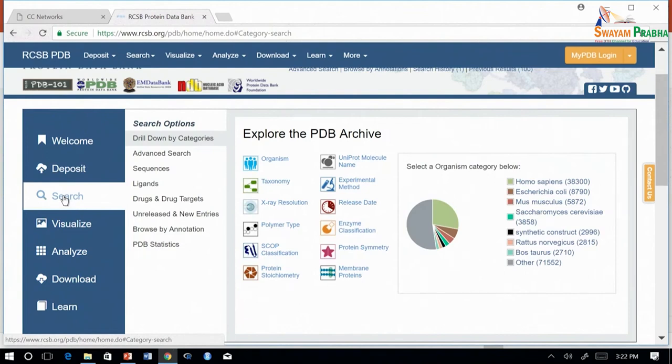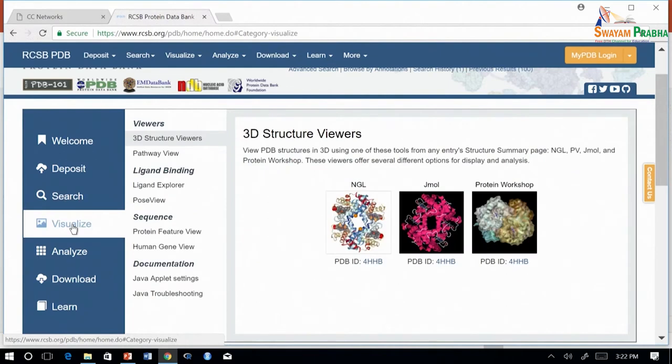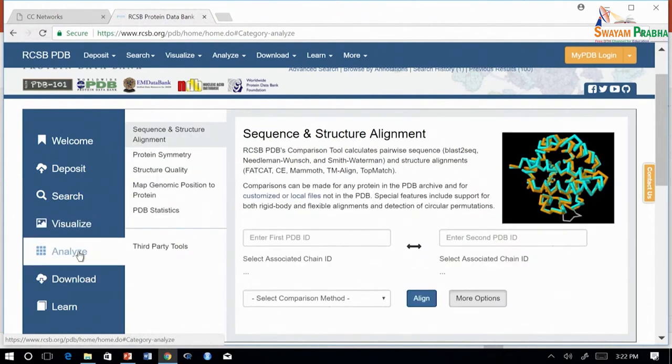The search tab is for users to search for a given crystal structure. The visualize tab gives software to view the 3D structures, sequence features, or interactions with ligands. The analyze tab gives in-house sequence and structure alignment tools, links to the PDB statistics page, as well as external tools.